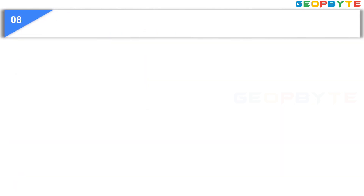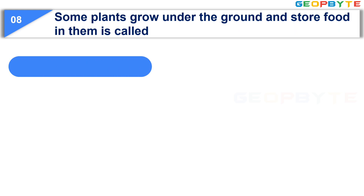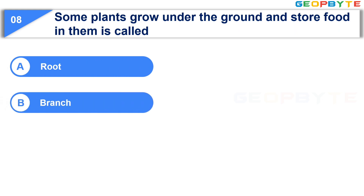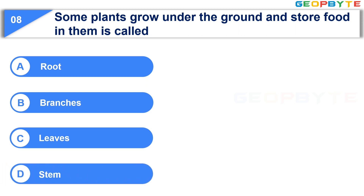Moving to the next question. Some plants grow under the ground and store food in them. This is called: Option A, Root. Option B, Branches. Option C, Leaves. Option D, Stem. Your time starts now.